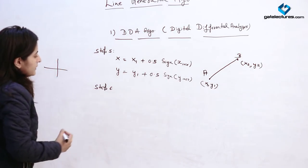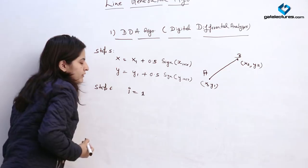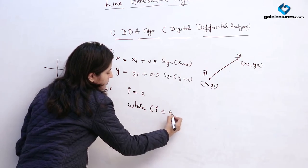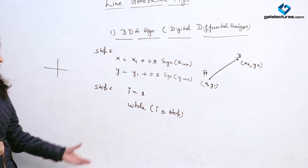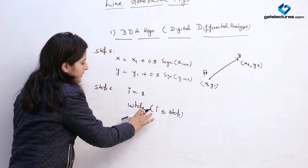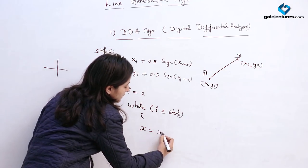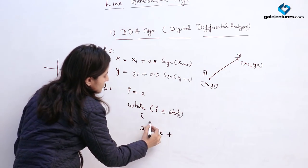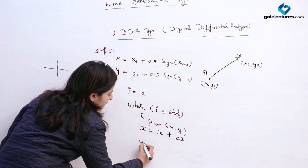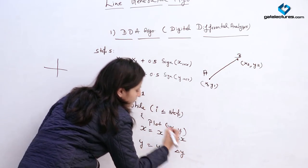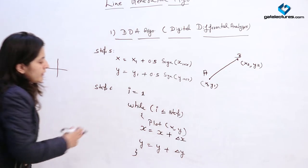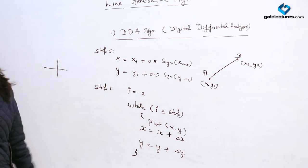In the final step, we set i equals 1 and increment the values until i is less than or equal to steps. This means our increments go up to the step value — for example if step is 4, we iterate i = 1, 2, 3, 4 and the algorithm stops. At each iteration, first we plot the current pixel, then update x equals x plus x_increment and y equals y plus y_increment. Both x and y change according to the calculated increment values, continuing until i reaches the step value. This is the complete DDA algorithm.